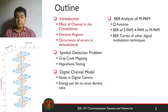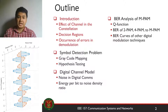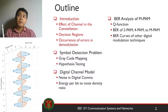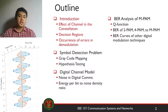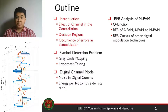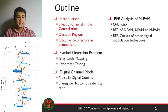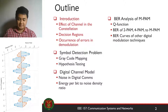The third part covers the digital channel model — the noise in digital communications, how we quantify it, and how we measure the corruption in digital modulation. And finally, after all that, we will talk about how we analyze the bit error rate and how to characterize it.